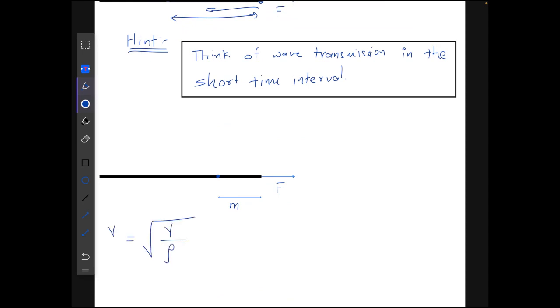So from here, the distance, let's say it to be m, distance m equals √(Y/ρ) times Δt. Now let's say there's an extension of Δm in this part of the wire due to this force.